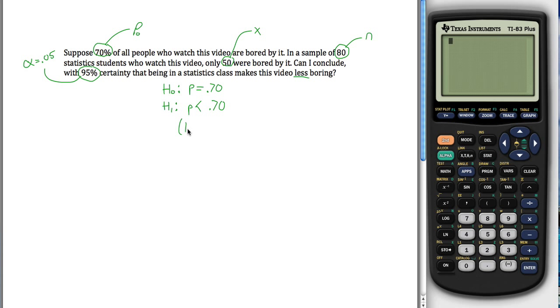So what really we have here is a left-tailed test, because being in a statistics class makes this less boring. This p here is a population proportion, but specifically it's a population proportion if the entire population were in a statistics class. So it's easy to confuse this with a sample proportion, p-hat, which I guess I can write that off to the side. P-hat, which is x over n, in this case, 50 over 80. This is similar to that, except this is population and this is sample.